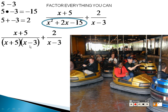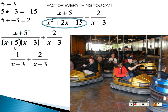Well, both have x minus 3, but this one has an x plus 5 and this one doesn't. There are two ways to do this. I could put the x plus 5 on both sides, or you could realize that there's an x plus 5 on both the top and the bottom and just get them to cross right off, which is what I'm going to do, leaving you with 1 over x minus 3 plus 2 over x minus 3. If I have 1 over that and 2 over that, I actually have 3 over that, which is much simpler.